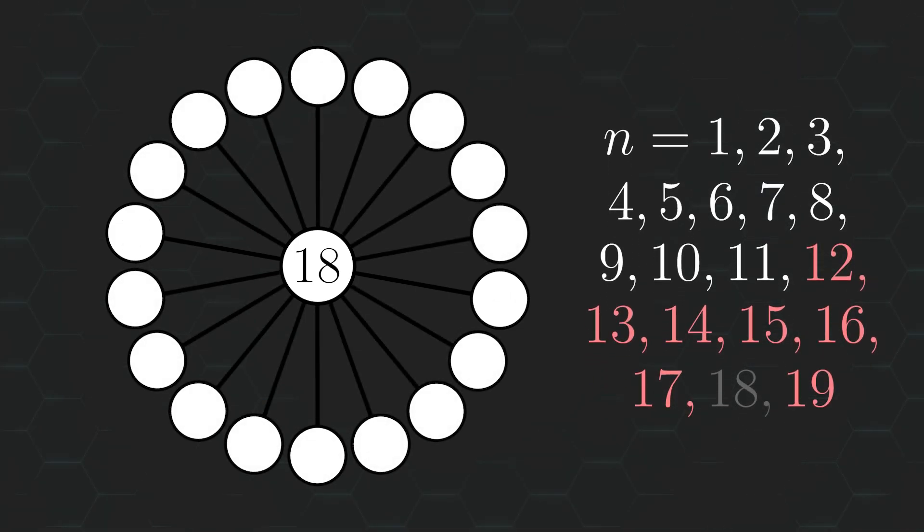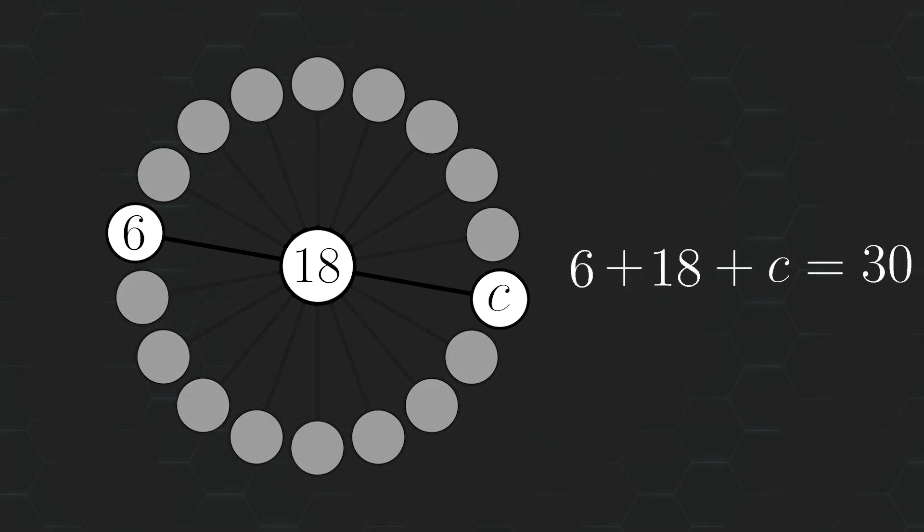Also notice that we can't place the number 6 in any circle as well. Because if we did, then since 6 plus 18 gives us 24, then the only number we can place within the third circle at the end of this line to make the sum add up to 30 would be 6, which isn't possible, since we're only allowed to use each integer once.